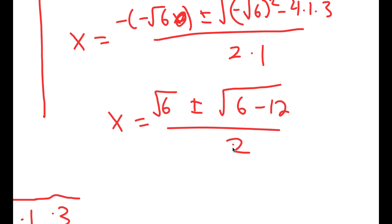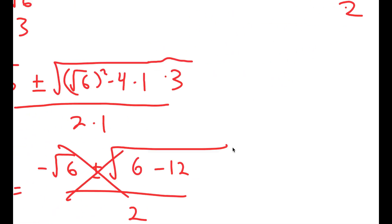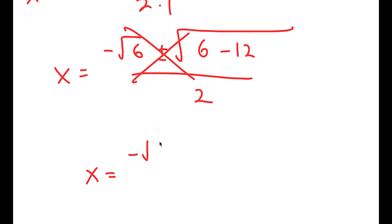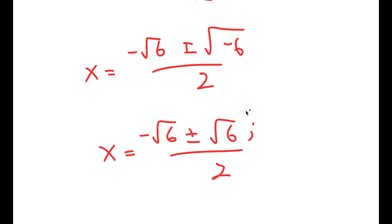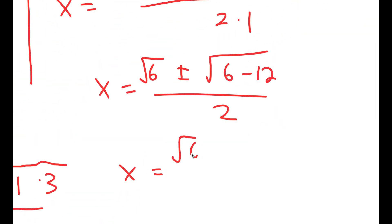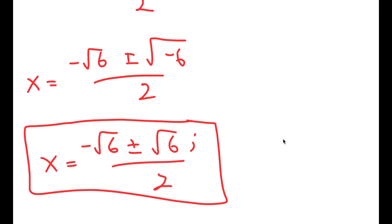Because both of these don't have real solutions, we can go for imaginary solutions. Going back, I had x is equal to negative square root of 6 plus or minus the square root of negative 6, all over 2. The square root of negative 6 is the same thing as the square root of 6 times i. So the first solution is negative square root of 6 plus or minus the square root of 6 times i, all over 2. And the second solution gives the square root of 6 plus or minus the square root of 6 times i, over 2.